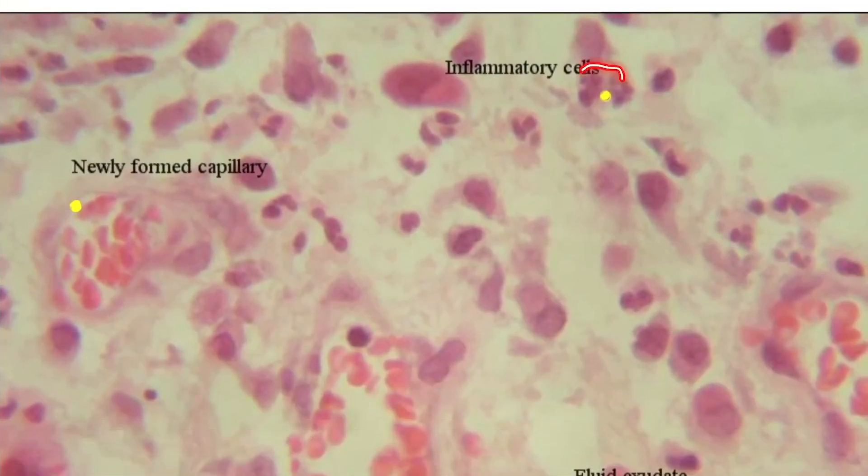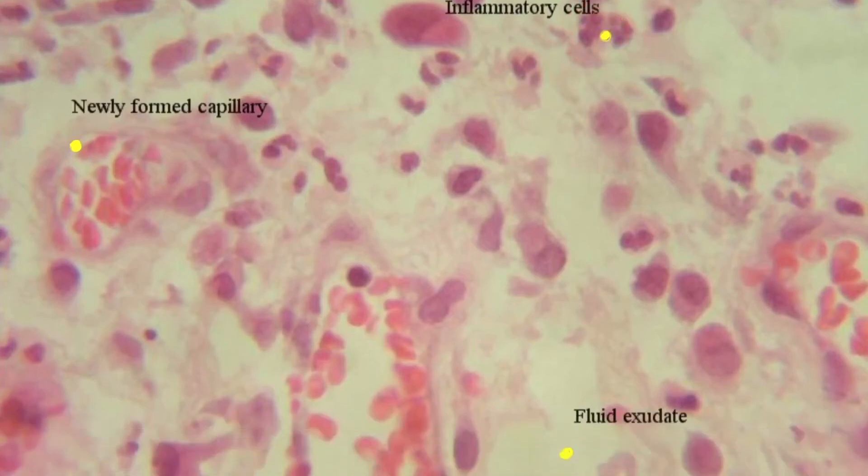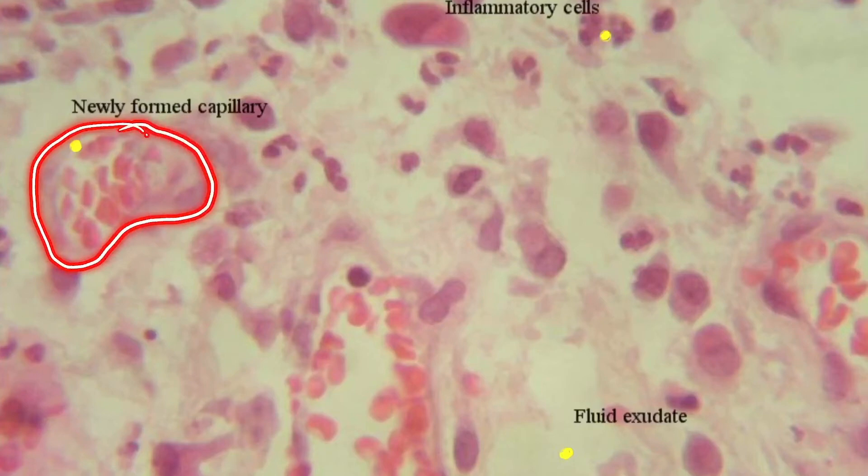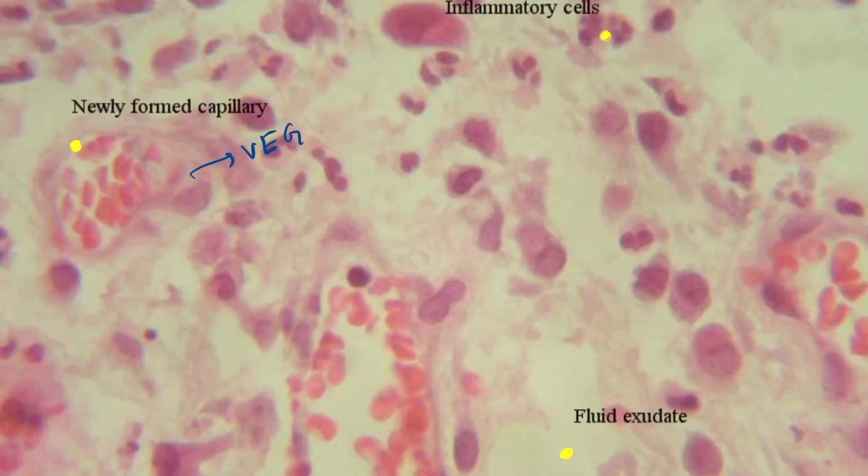First, you can see the inflammatory cells are there. There are newly formed capillaries, formed via VEGF—that is vascular endothelial growth factor.